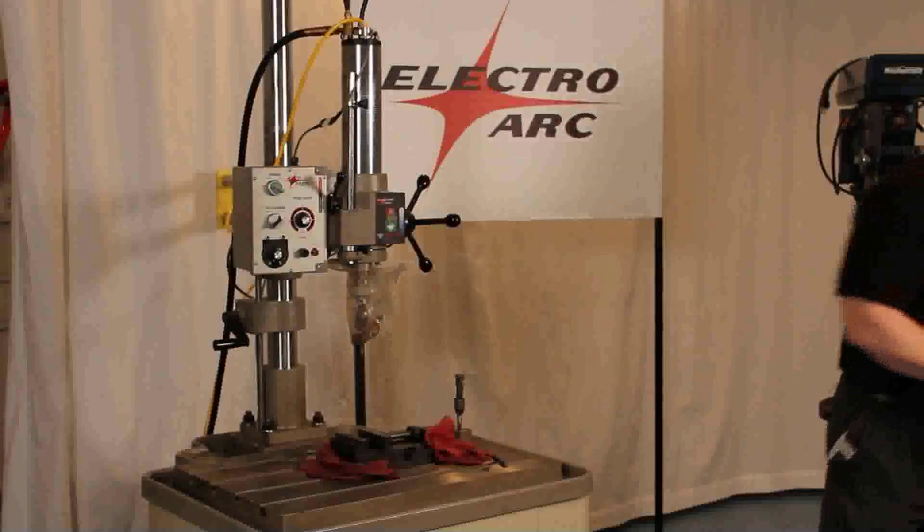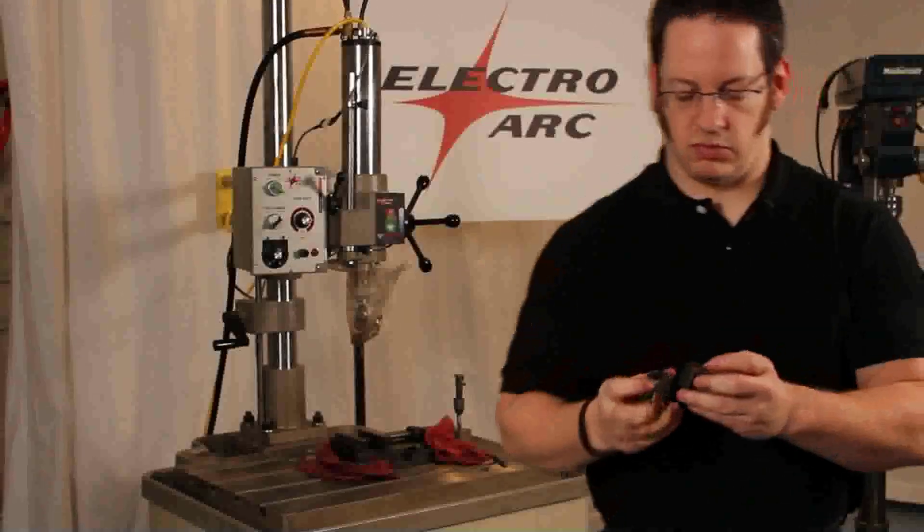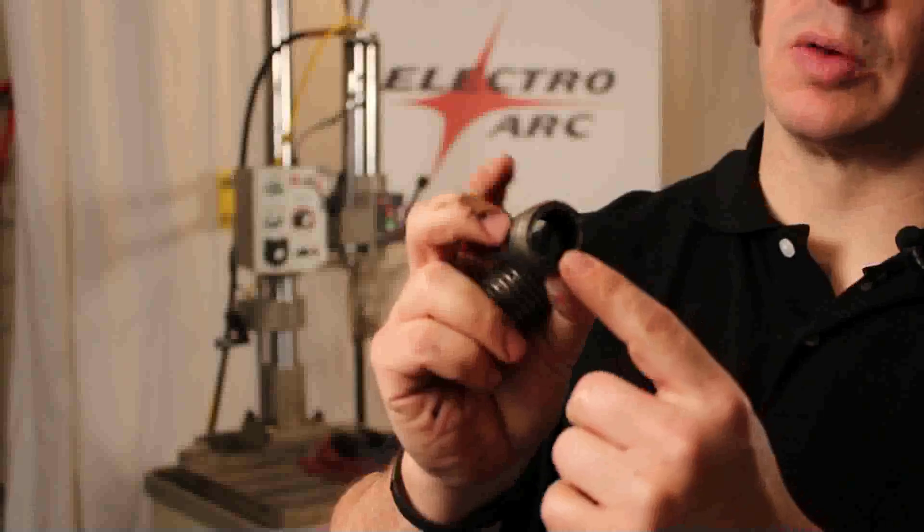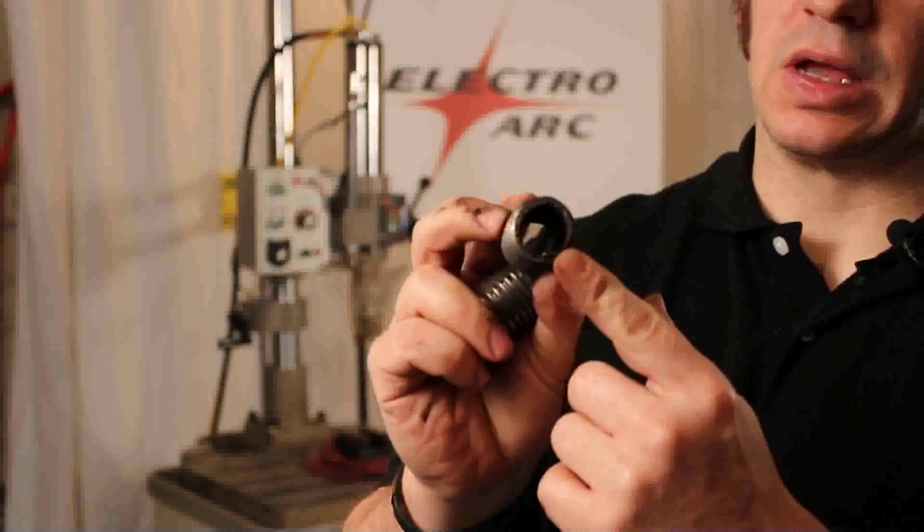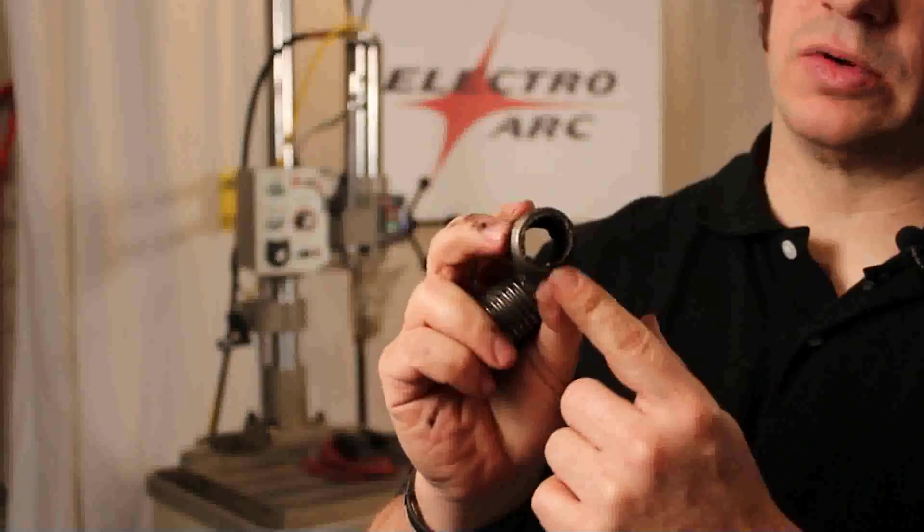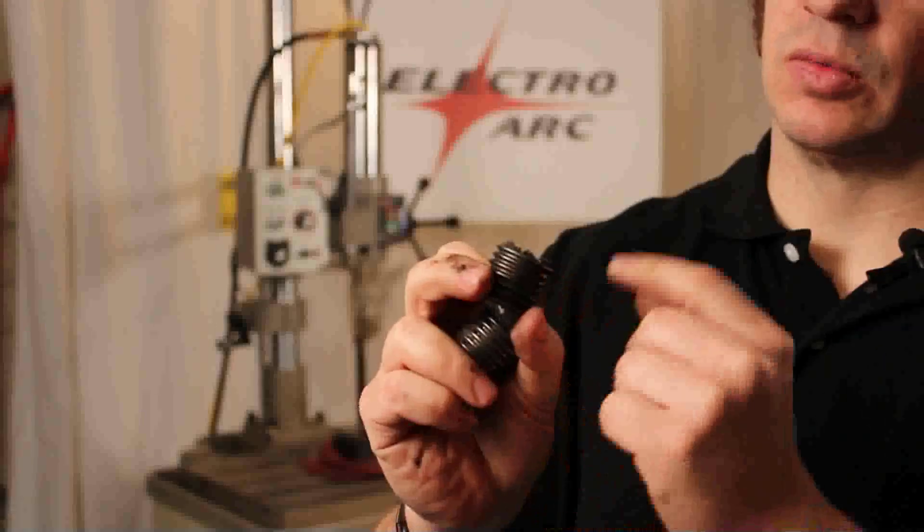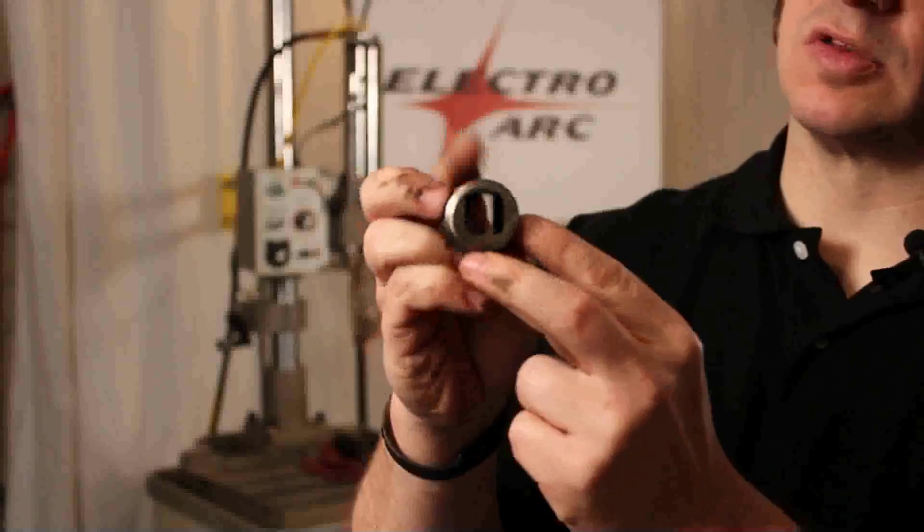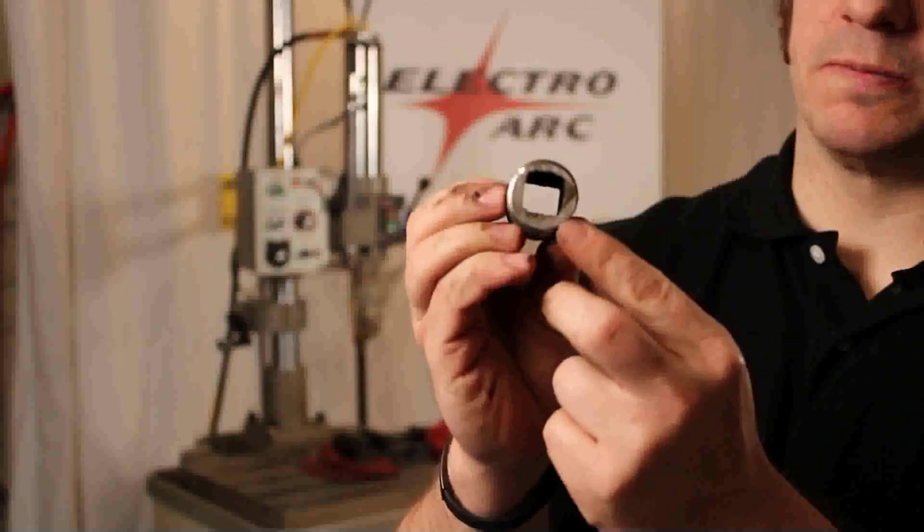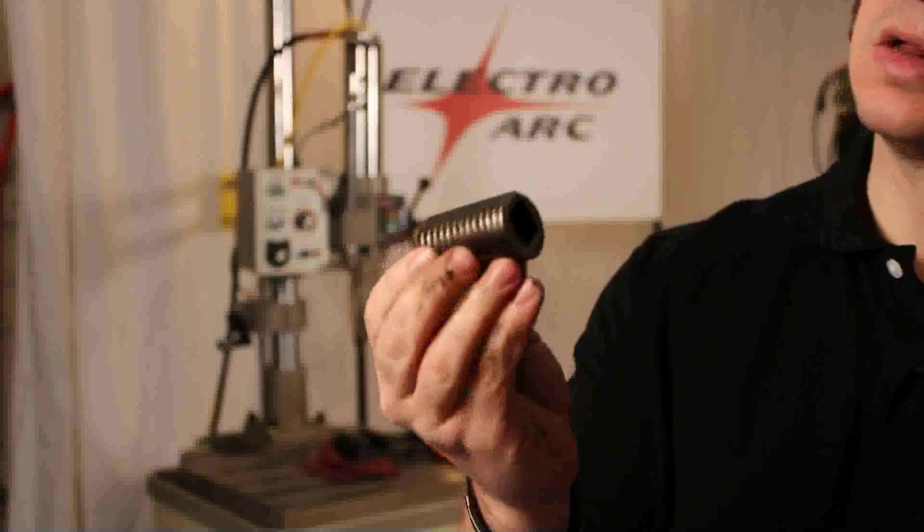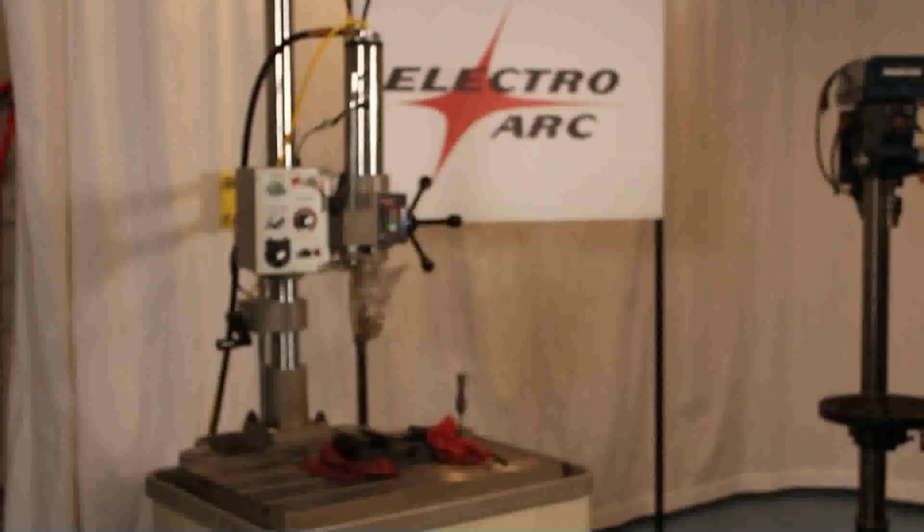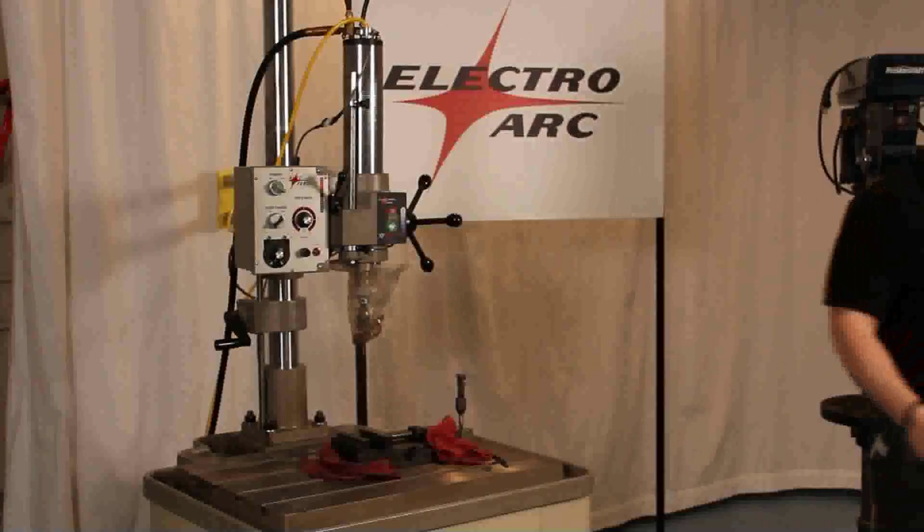So as far as bolts go, we have a couple different methods for removing bolts. Here you can see a stud. We used a round electrode and you could use an easy out to remove that. Once you disintegrate your hole, use your easy out. We can also do shaped electrodes. So you could use a square electrode, burn a hole in there, a half inch square for example, and use a ratcheting tool to spin it back out.